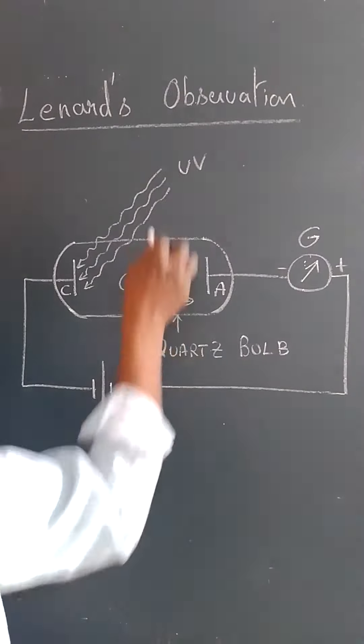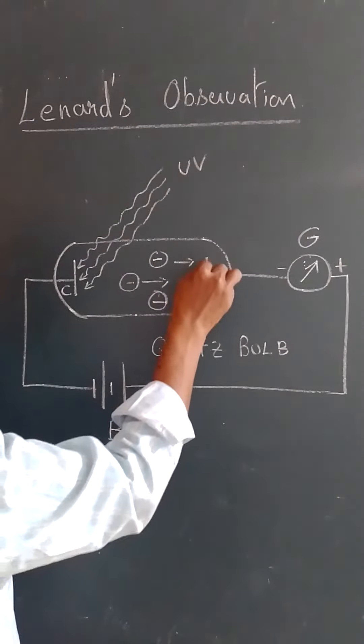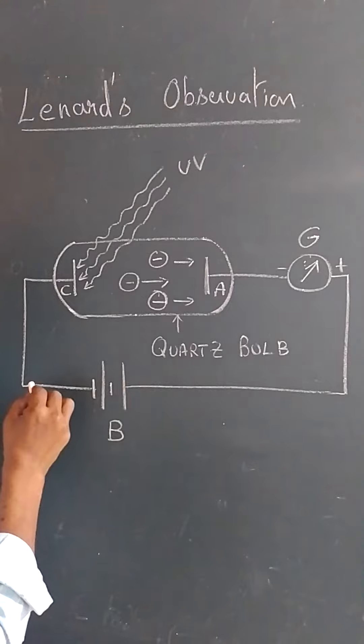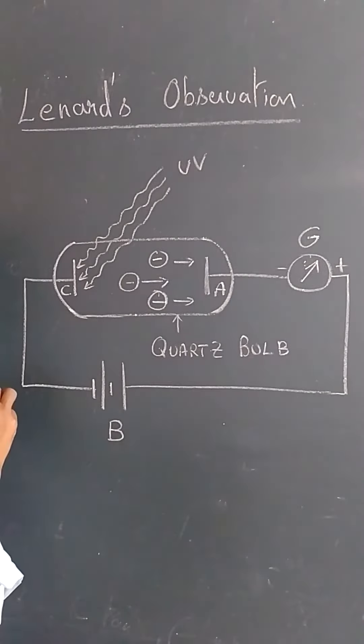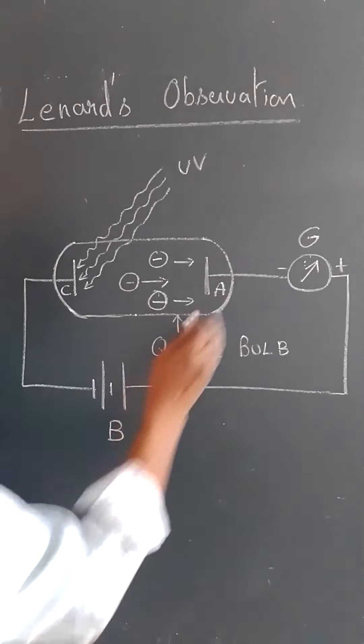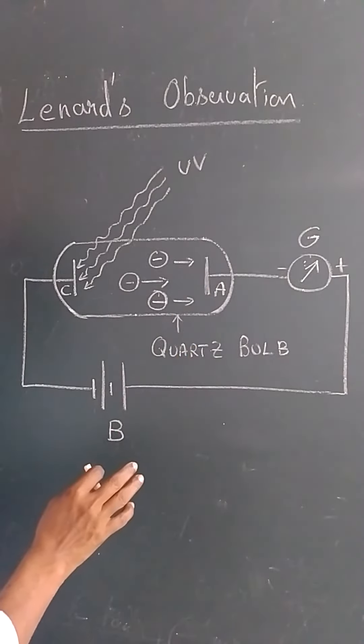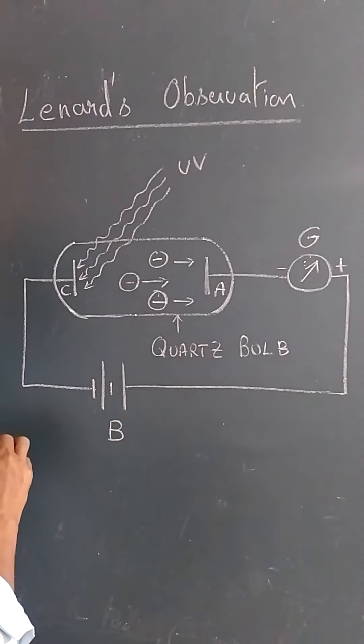At the same time, if you allow ultraviolet rays to fall on the iron positive plate or irradiate the positive plate, we can't see any deflection in that galvanometer. That is, no electrons are ejected from the anode. This is Lenard's observation.